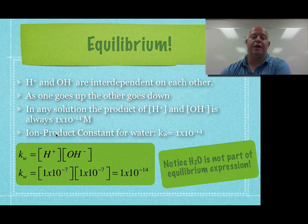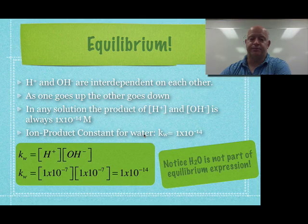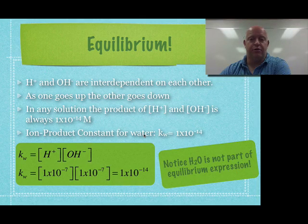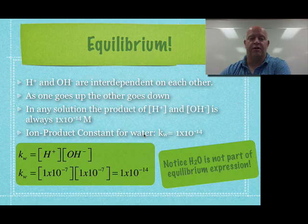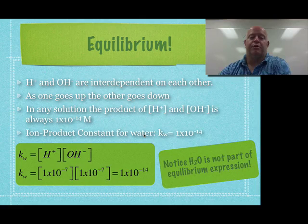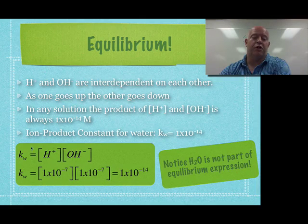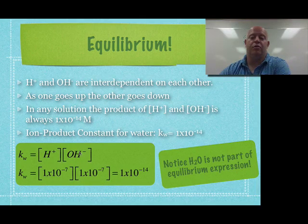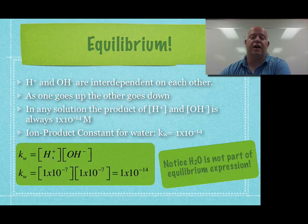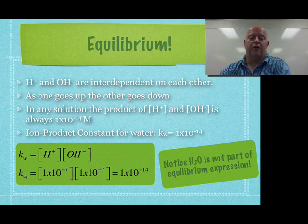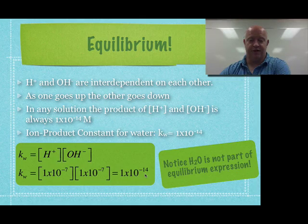We call this the ion product constant for water. It's really just a KEQ or a K-value, just like in our past unit dealing with equilibriums. But this is a special equilibrium for water, so we give it a special designation. So this is a water equilibrium. And again, water is not even in the equilibrium because it's a liquid. So really, the water equilibrium is only based off of your hydrogen ions times your hydroxide ions.